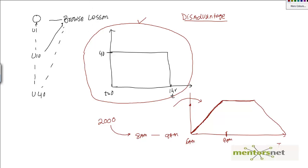Welcome back. In the last video we discussed the basic scenario and its disadvantages. Instead, we said the scenario should have a time when all users run the vuser init script or the login script. That period is called the ramp up period, where users ramp up. After that, once all users have ramped up, they go to the run state, which is called the steady state.